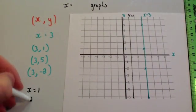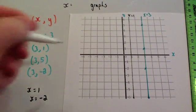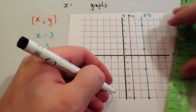If they asked us to draw the graph x equals minus 2, again, it would be a vertical line through minus 2.